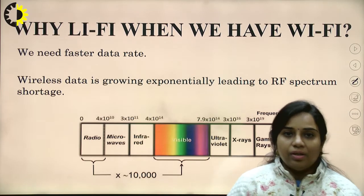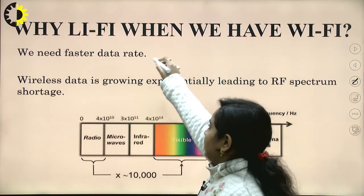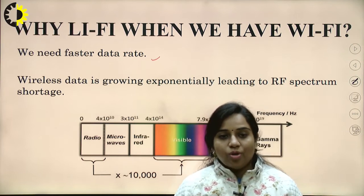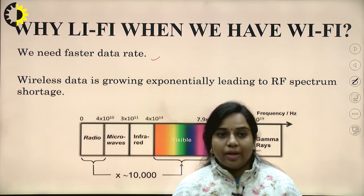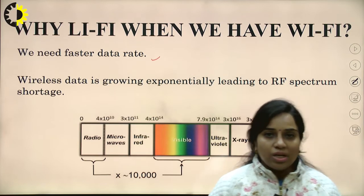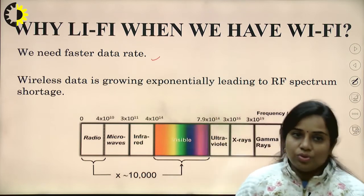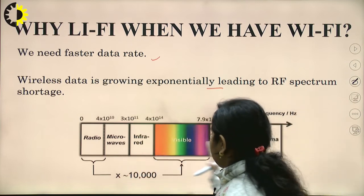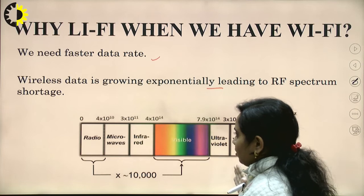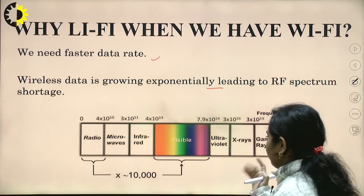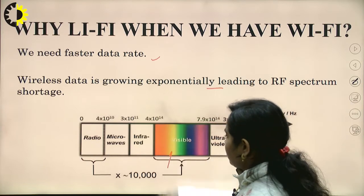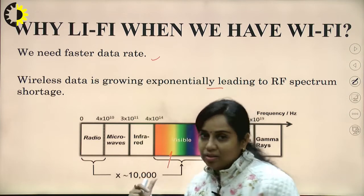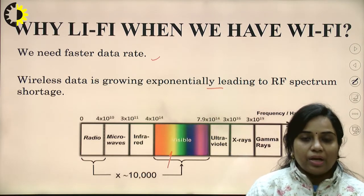So, why is Li-Fi used when Wi-Fi is already present? We need faster data rates because, as the number of users has increased, larger and faster data rate transmission is required, and that is achieved using Li-Fi technology. Wireless data is growing exponentially, leading to RF spectrum shortage. Looking at the electromagnetic spectrum, we can see the visible region, infrared region, microwave, radio, x-ray, gamma, and ultraviolet bands. Li-Fi has a higher data rate compared to Wi-Fi technology.